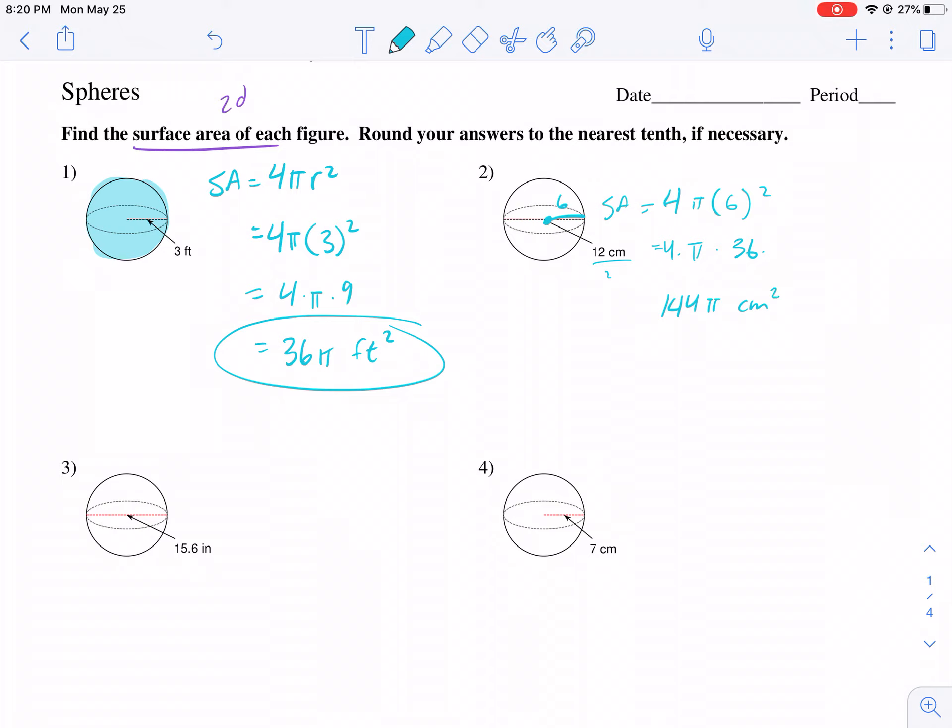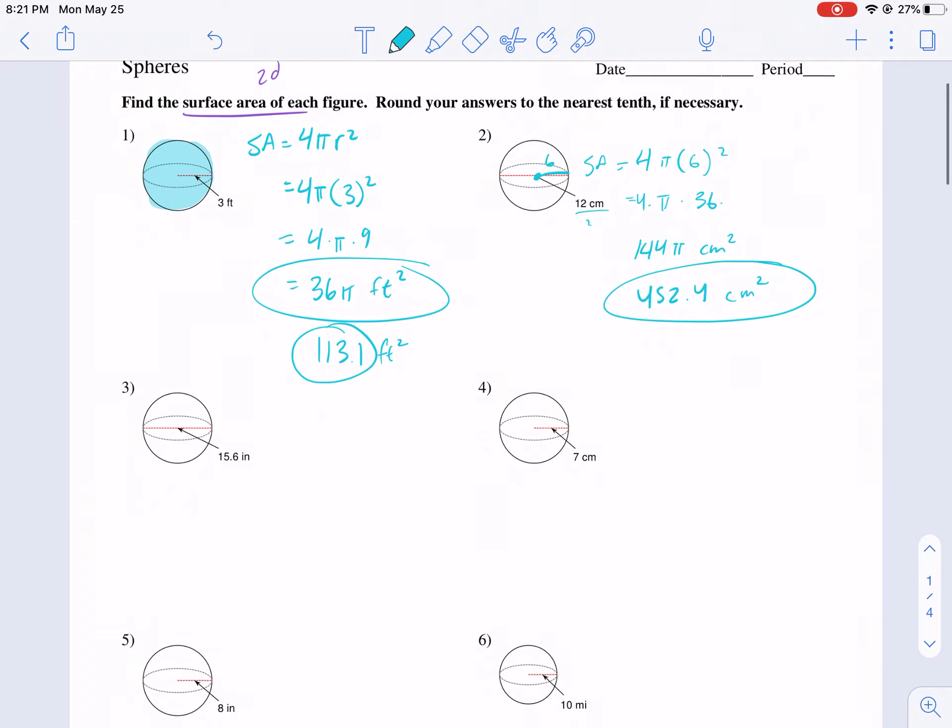Now it says round your answer to the nearest tenth. I guess this worksheet might be asking for the decimal form, so that would be 113 for this one to the nearest tenth, and then 144 times π for this one would be 452.4 centimeters squared. So just in case that's what the answer is asking for, but other than that it's pretty straightforward for the first page.